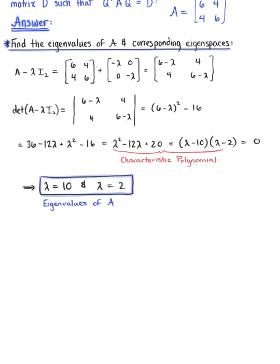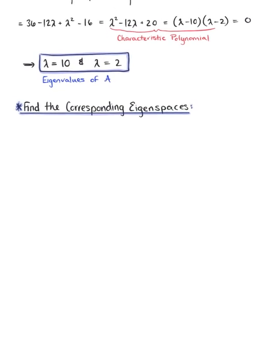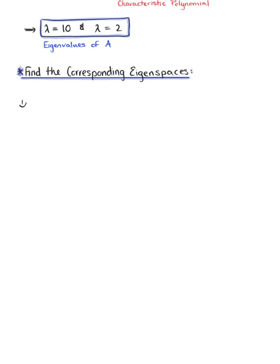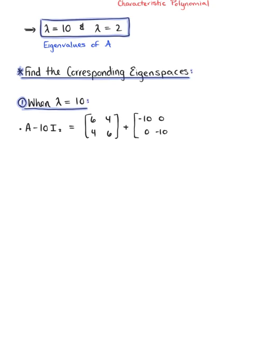Setting the characteristic polynomial equal to zero, the eigenvalues are λ = 10 and λ = 2. Now we need to find their corresponding eigenspaces. For case 1, when λ = 10, we find matrix A minus 10 times the identity: [6,4;4,6] + [-10,0;0,-10] = [-4, 4; 4, -4]. We augment this with the zero vector to find the null space.